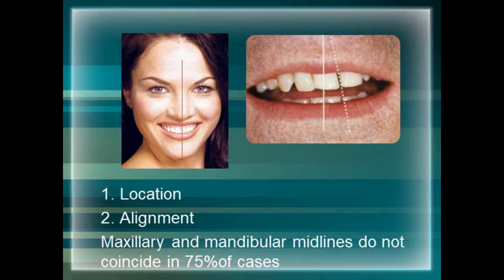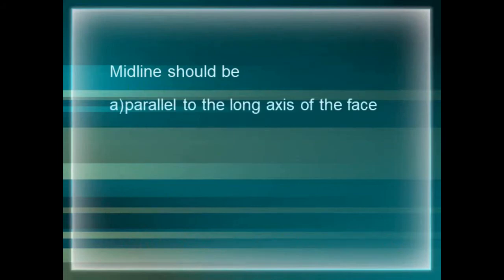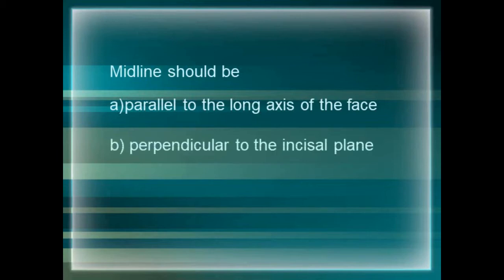While evaluating the dental midline, one must consider two factors: the location of the midline and the alignment of the midline. Maxillary and mandibular midlines do not coincide in 75% of cases, so it is always advisable not to use the mandibular incisor midline as a reference point to set the maxillary midline. This mismatch is not an issue because in almost all cases mandibular teeth are not visible during smile. In short, the midline should be parallel to the facial midline, perpendicular to the incisal plane, and should run over the papilla dividing it into equal halves.